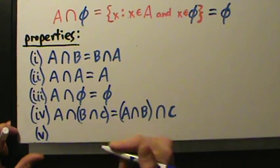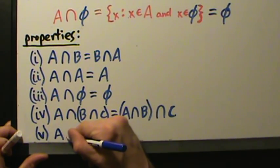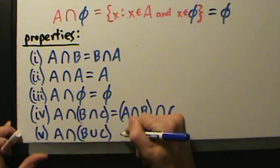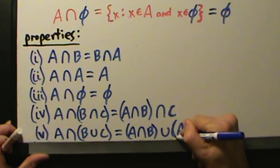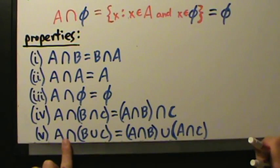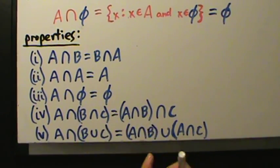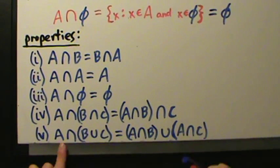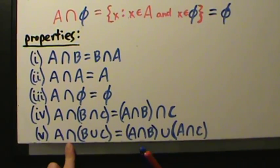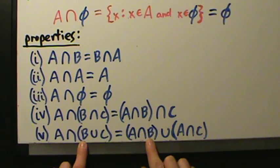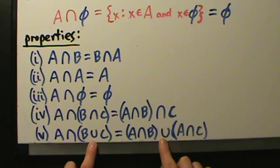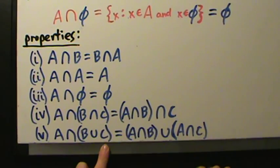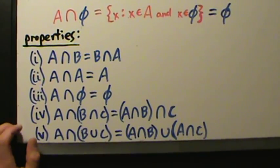Property 5, which is more complicated and we'll discuss in a different video, says A intersect (B union C) is the same thing as (A intersect B) union (A intersect C). So A intersected with the quantity B union C equals A intersect B, union A intersect C. It's kind of like saying that intersection distributes over a union. We'll talk about it in a separate video, but for now let's see some quick examples.